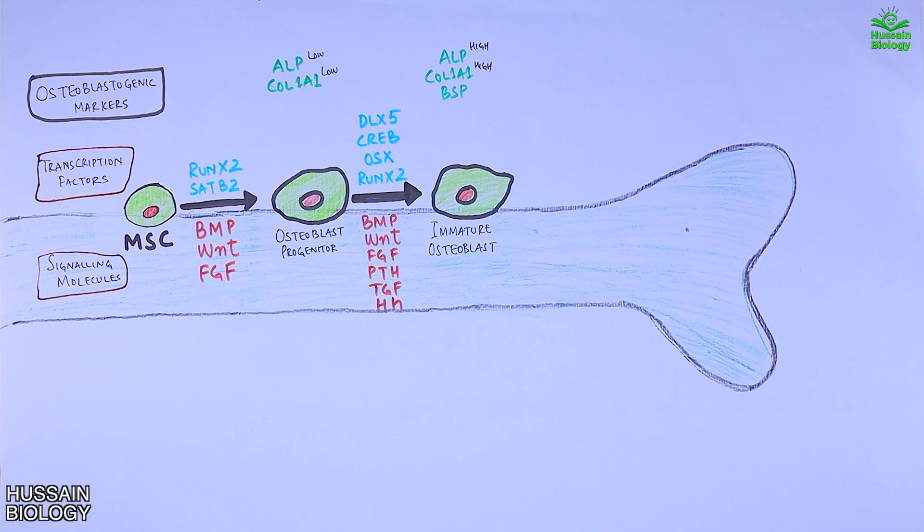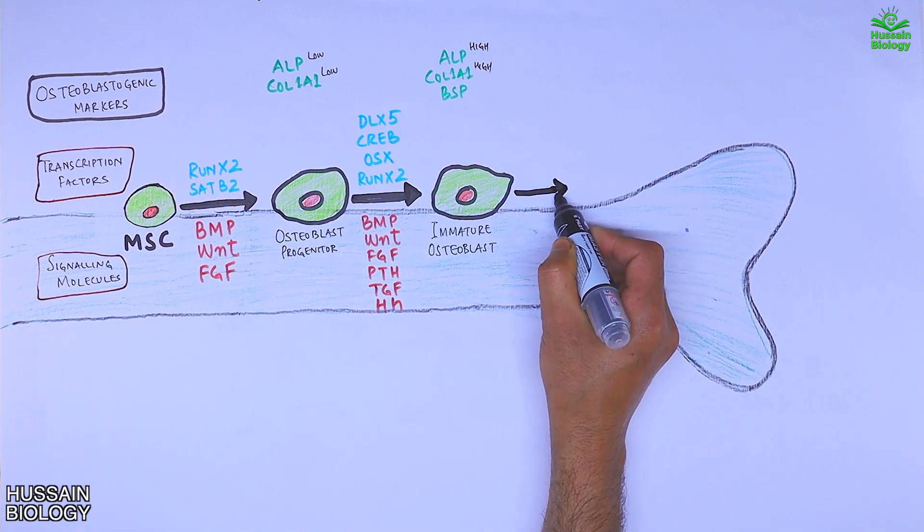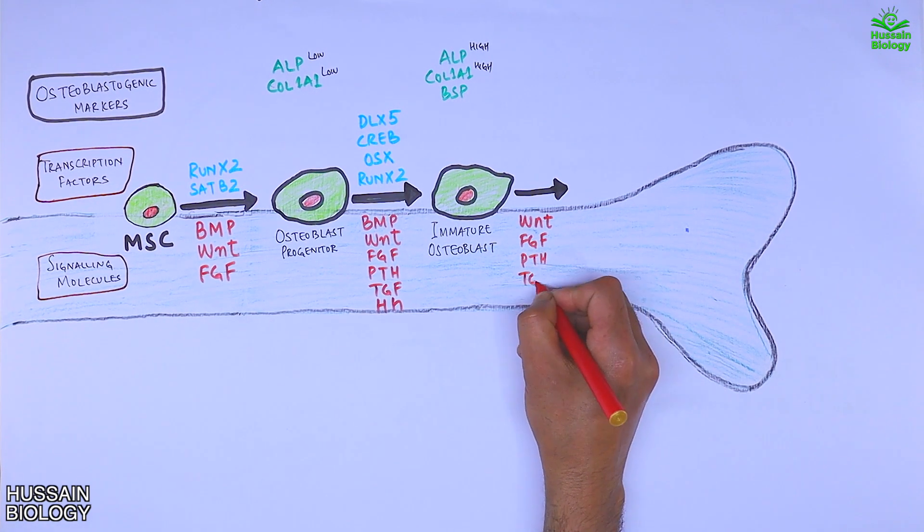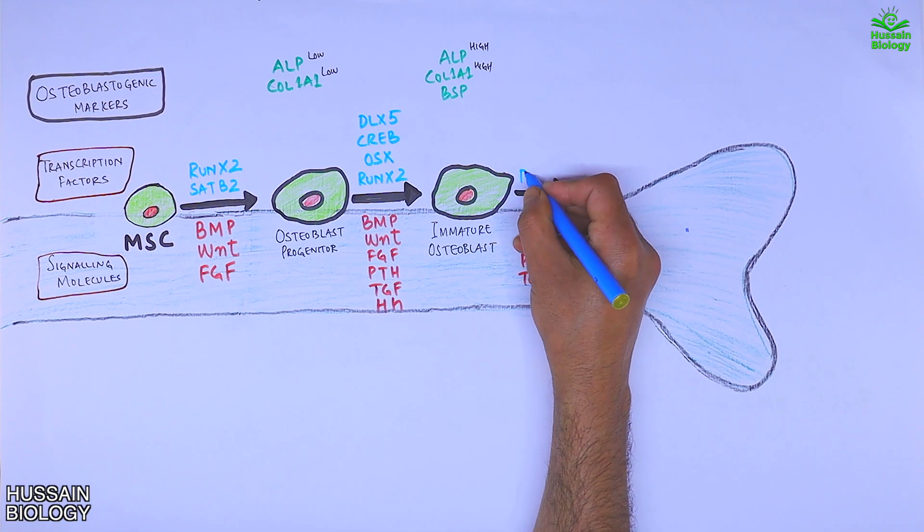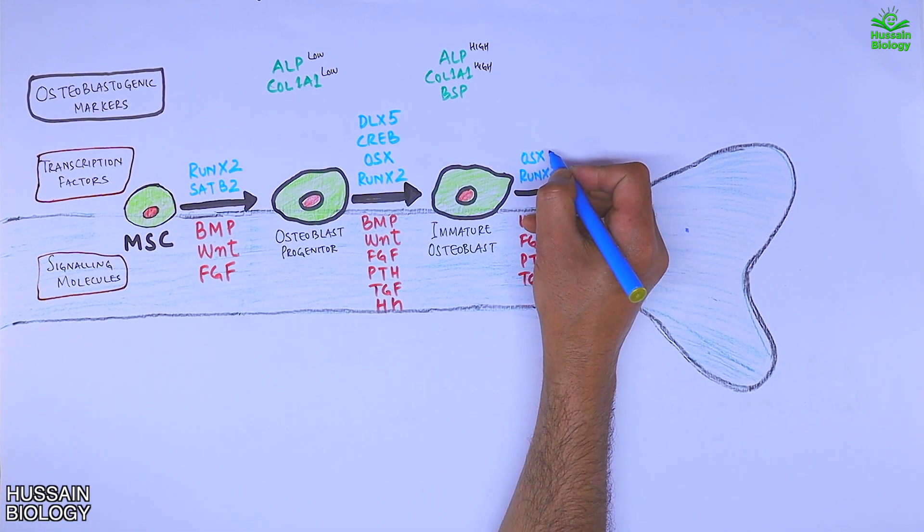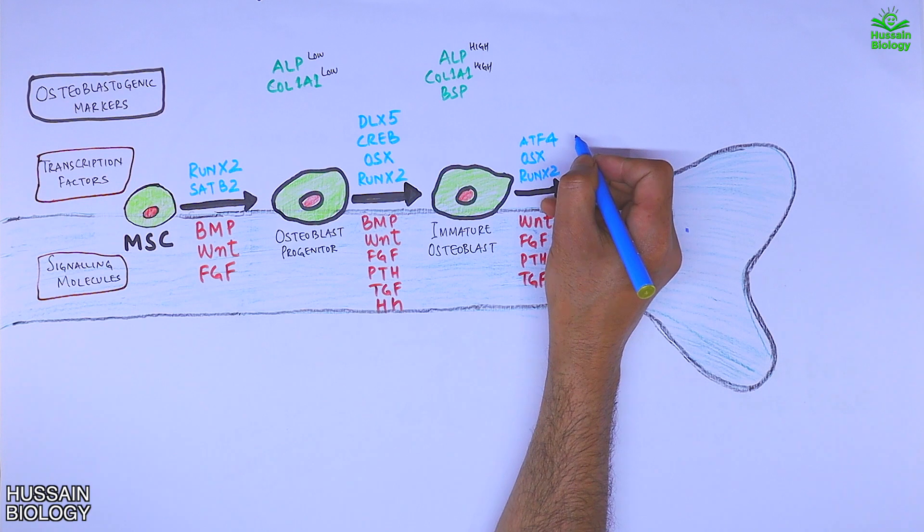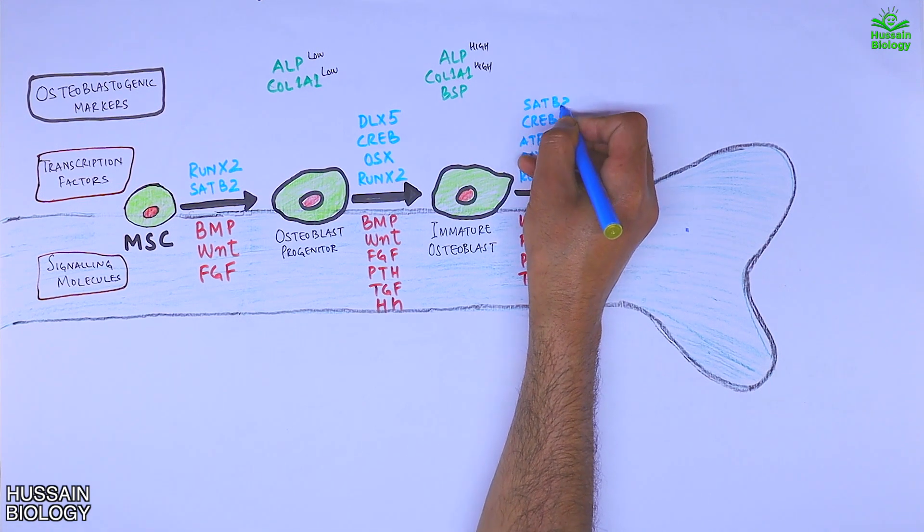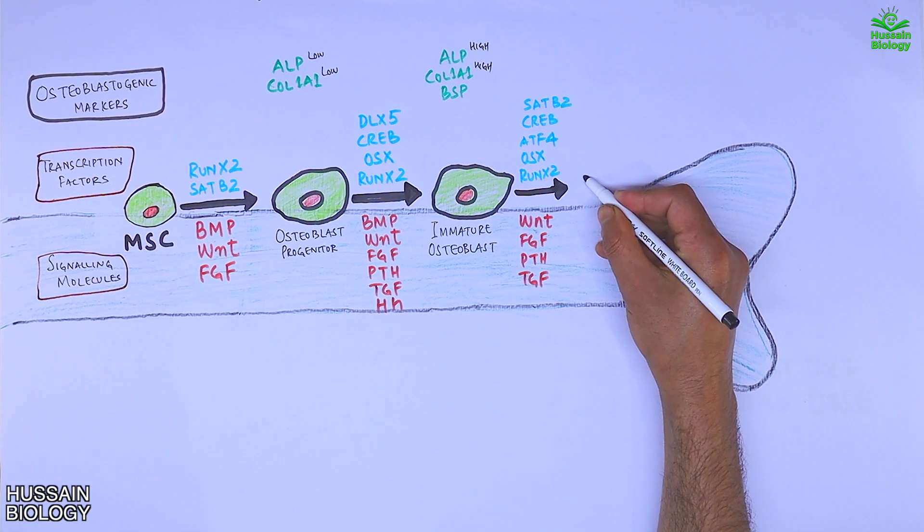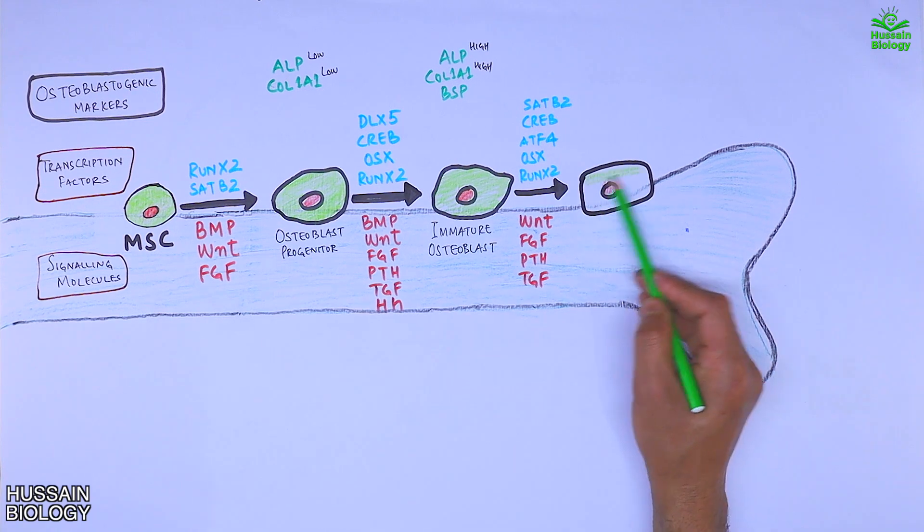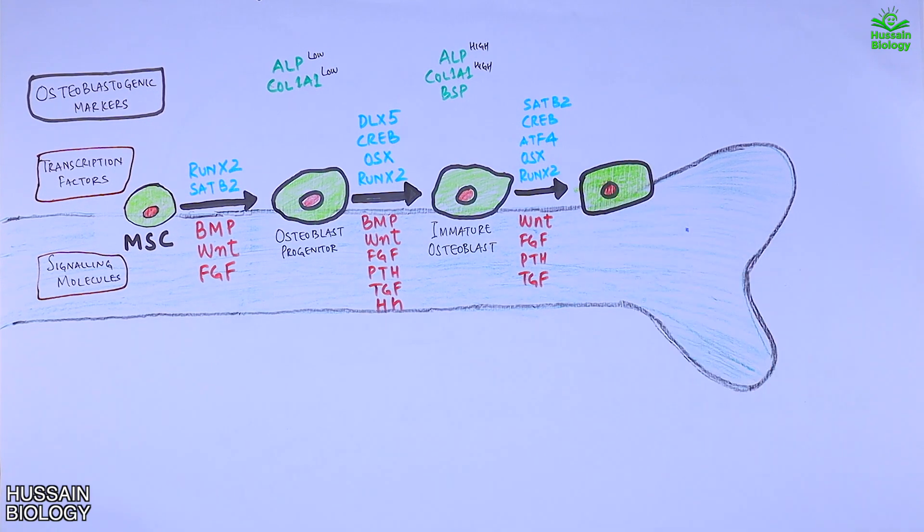Now on the immature osteoblast, more signaling molecules act upon it like WNT, FGF, PTH, and TGF. From this we get upregulation of RUNX2, OSX, ATF4, CREB, and SATB2, which eventually drive the differentiation of immature osteoblast into mature osteoblast. Furthermore, we see the osteoblast gets transformed into bone lining cells.